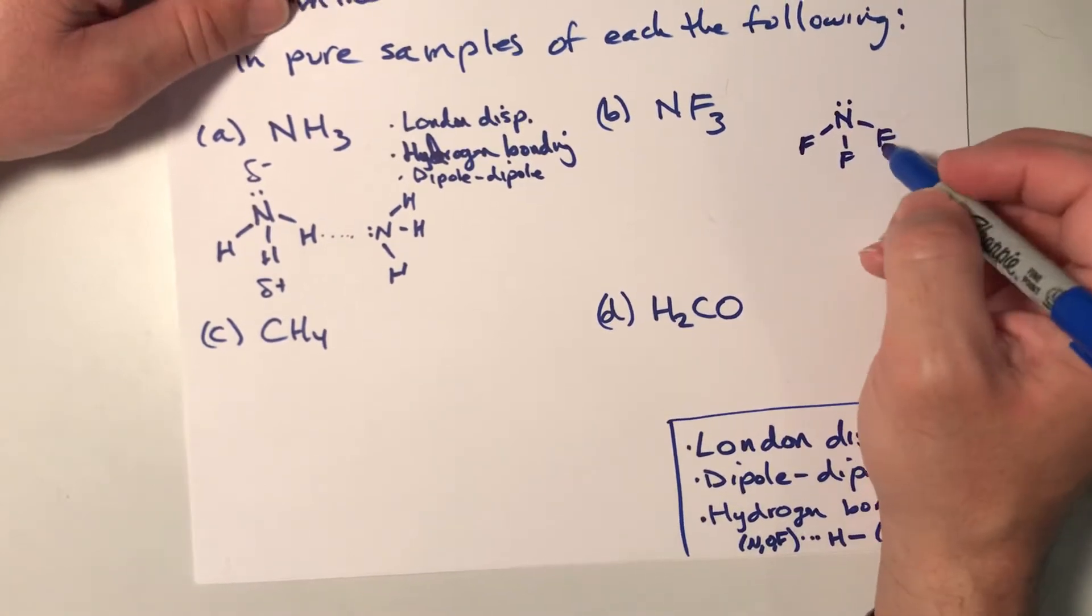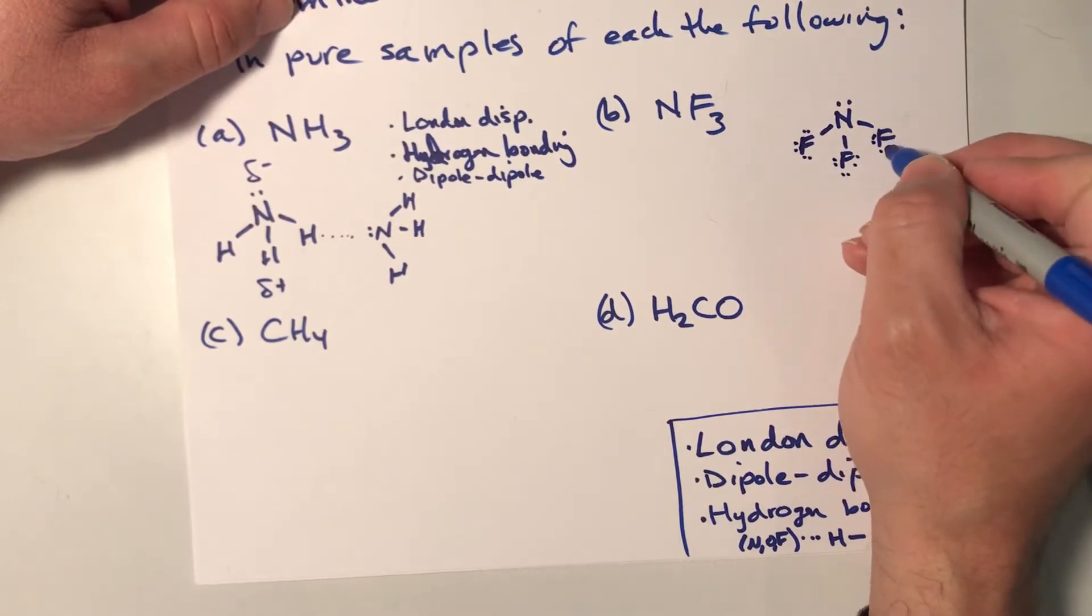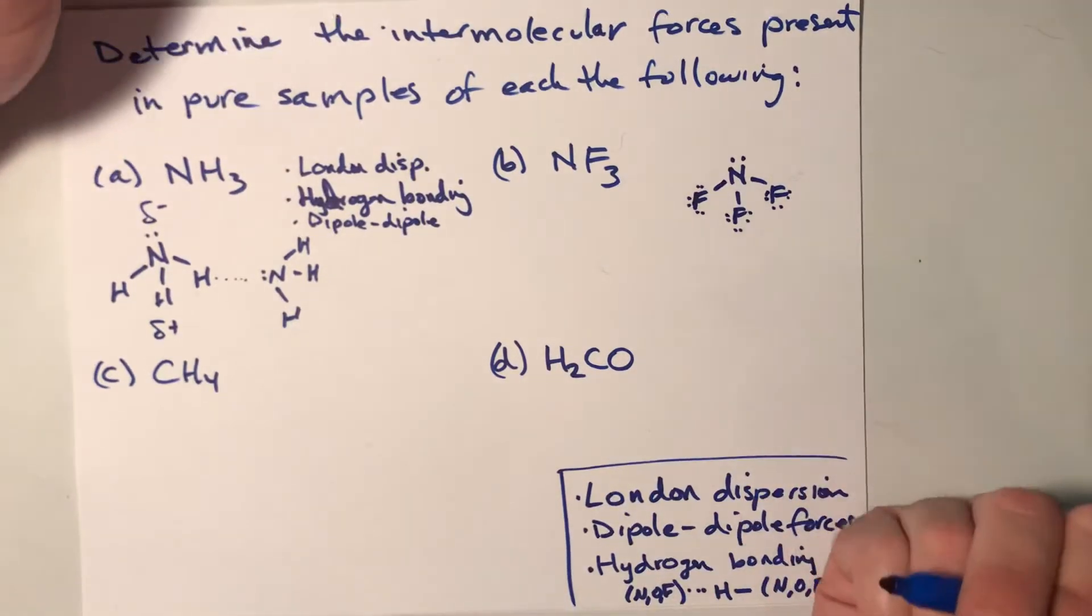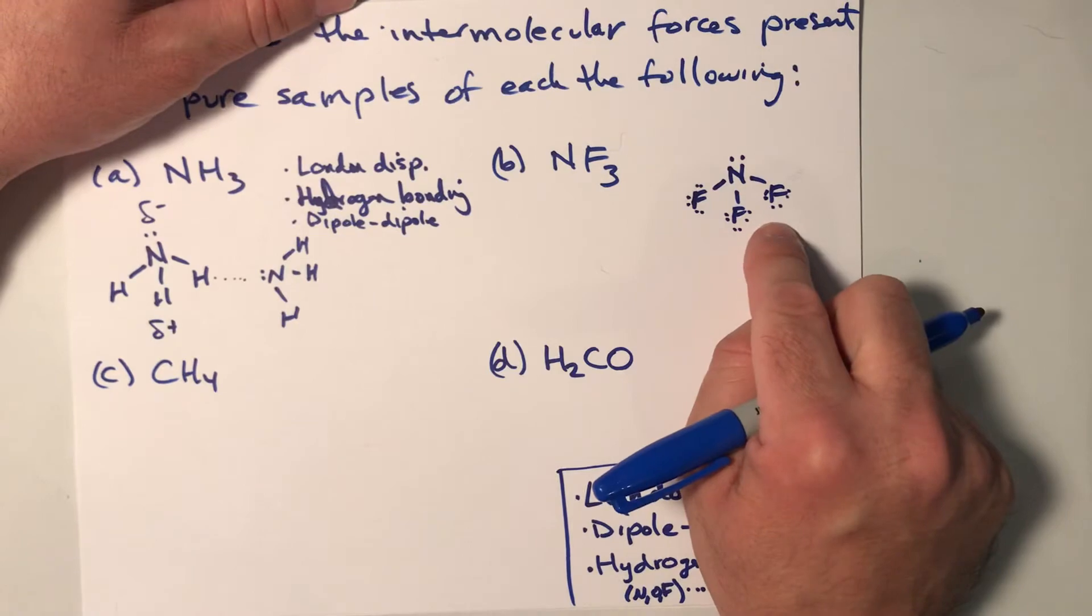All right? And remember, if you need to go back and look at these, you do need to be able to draw the Lewis structure and produce the shape pretty easily and quickly. So if that's something you need to review, you should go back and do that.